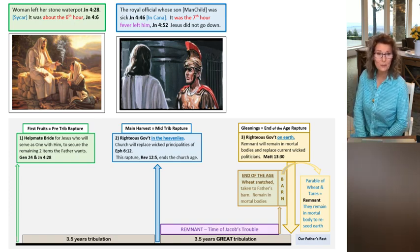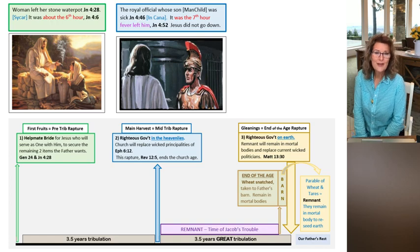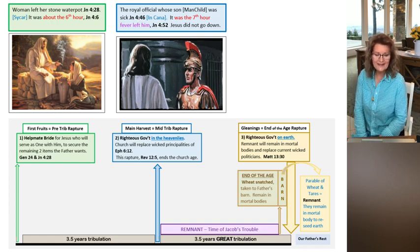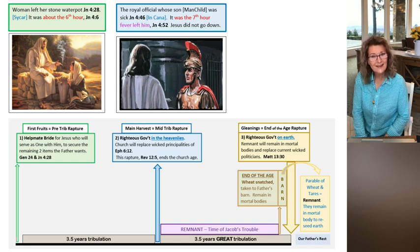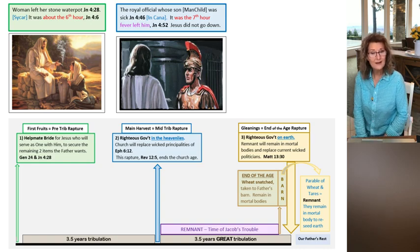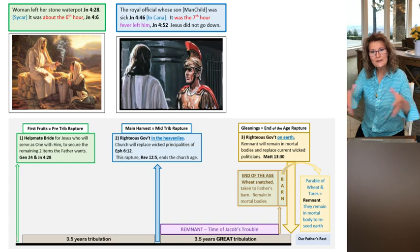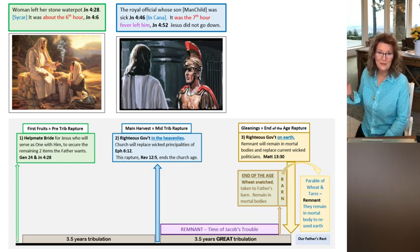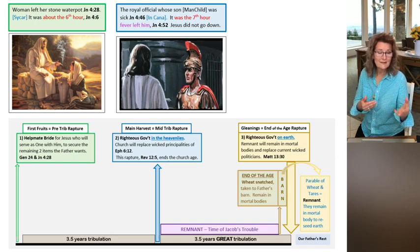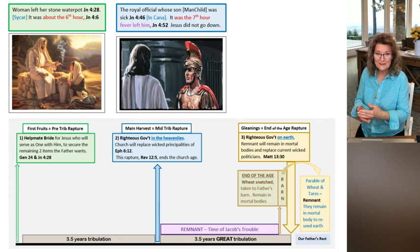The New American Standard calls him a royal official because the church is a royal priesthood and he is an official. The church speaks of government, whereas the bride speaks of intimacy, companionship, one who looks out after the household. David had wives and a militarized government. A kingdom is only as strong as their military.